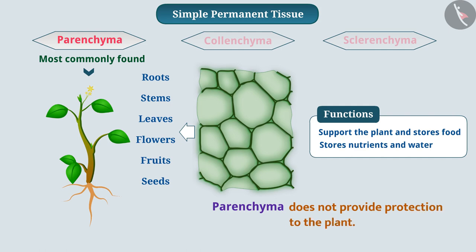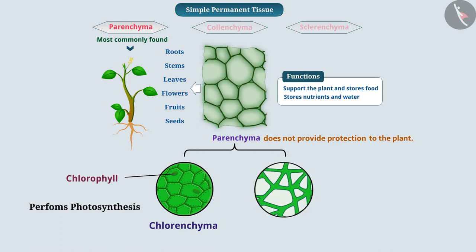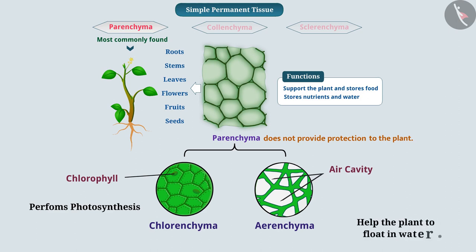Some parenchymatous tissues have cells that contain chlorophyll. Such parenchyma tissue is called chlorenchyma. These tissues perform photosynthesis. Similarly, the parenchyma tissue which has large air cavities in its cells is called aerenchyma. Air cavities help the plant to float in water. Therefore, aerenchyma is present in aquatic plants.